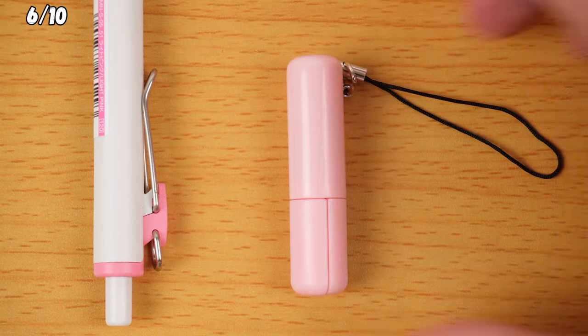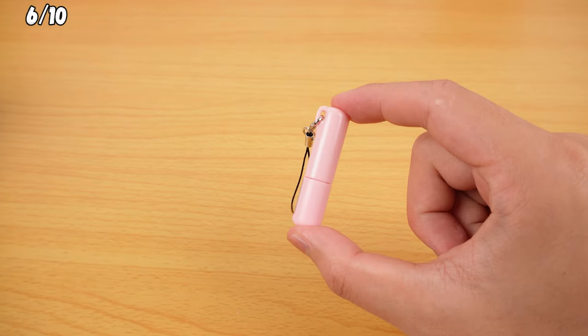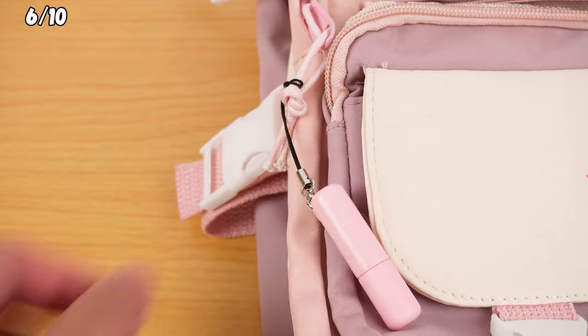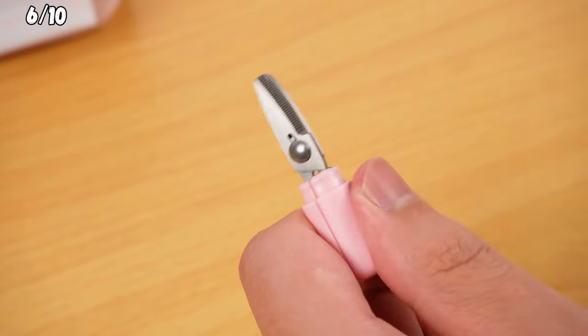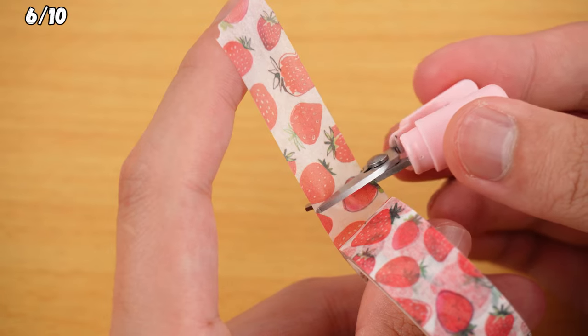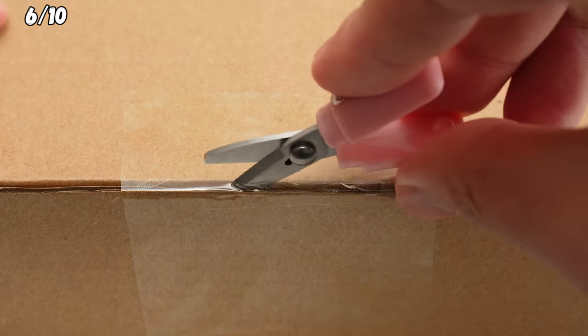Do you like compact stationery? Check out the Sunstar Stick Isle Scissors. Perfect for hanging on your backpack or pencil case. Pop off the cap, and voila! You've got a mini pair of scissors ready to snip thread, tape, or even tackle those tricky open packages.